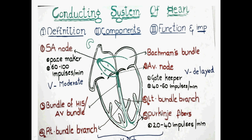Now let's talk about the velocities. The velocity of the conducting system in the SA node is moderate, in the AV node it is very very slow or almost delayed, and in the ventricles the velocity is high. Knowing the velocities of each component of the conducting system is very important in understanding the normal ECG.